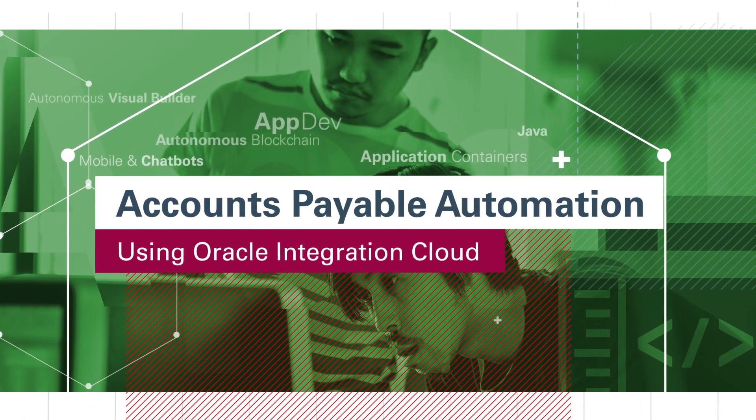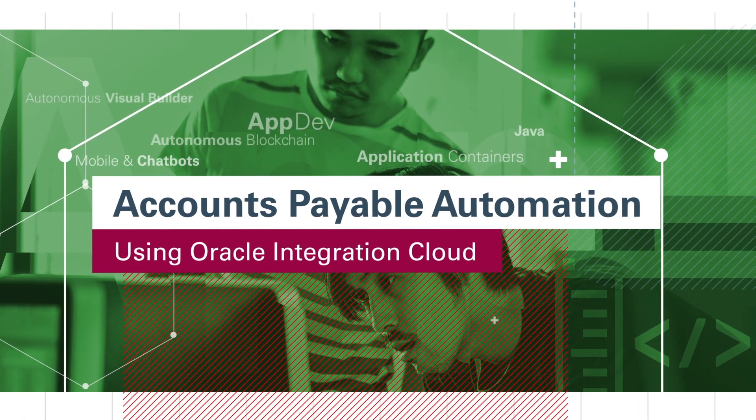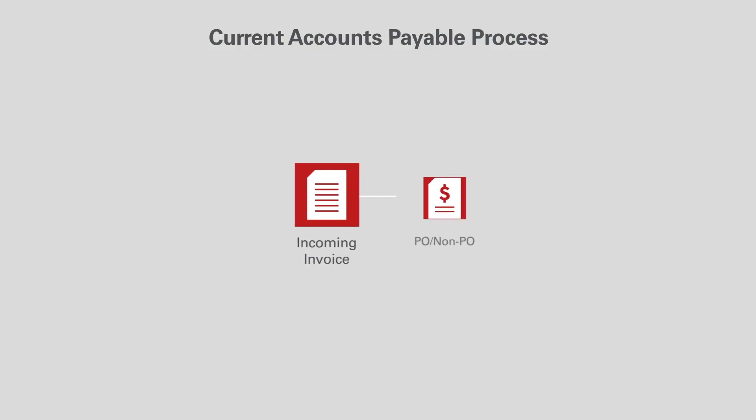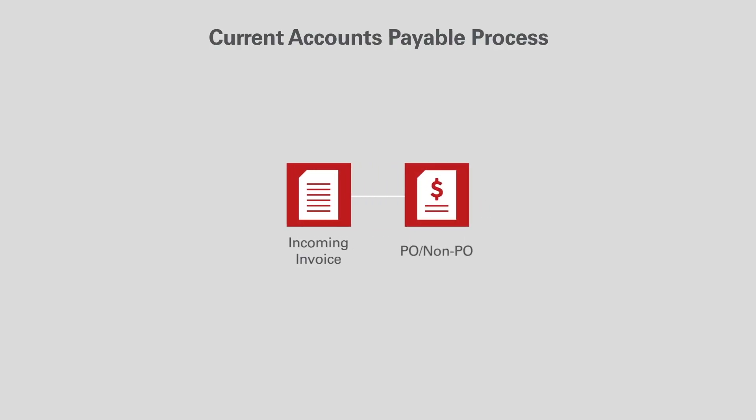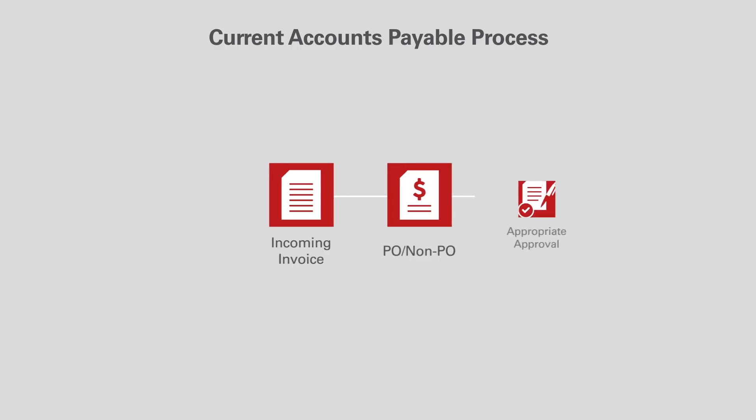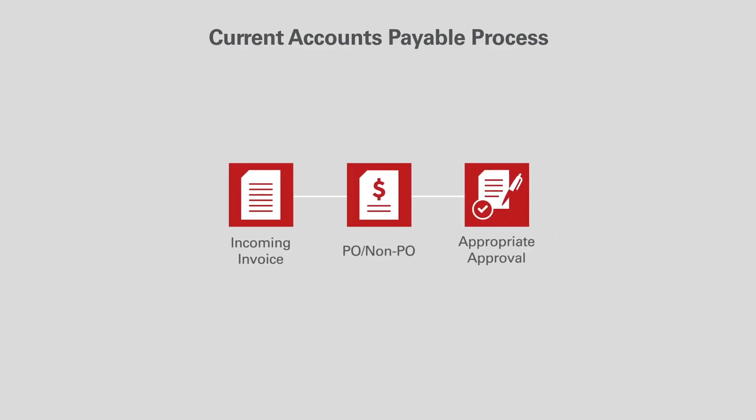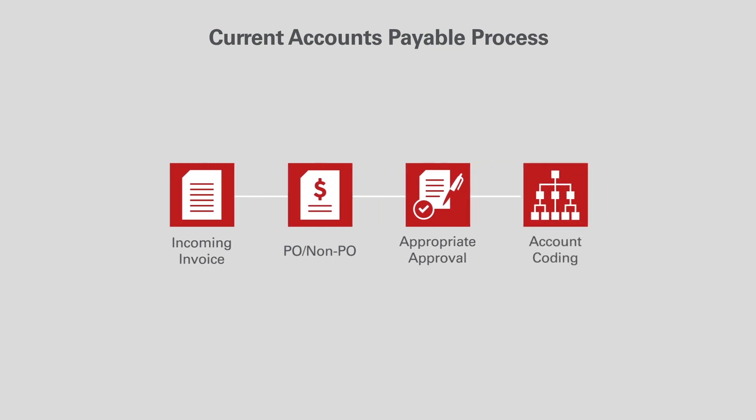The Accounts Payable Department in many organizations has to deal with many paper-based invoices coming through different channels. An employee has to figure out the type of the invoice — whether it's a purchase order or a non-purchase order — and based on the type, redirect it to the appropriate action taker. If it is a non-purchase order, they also have to do buyer coding on top of it.